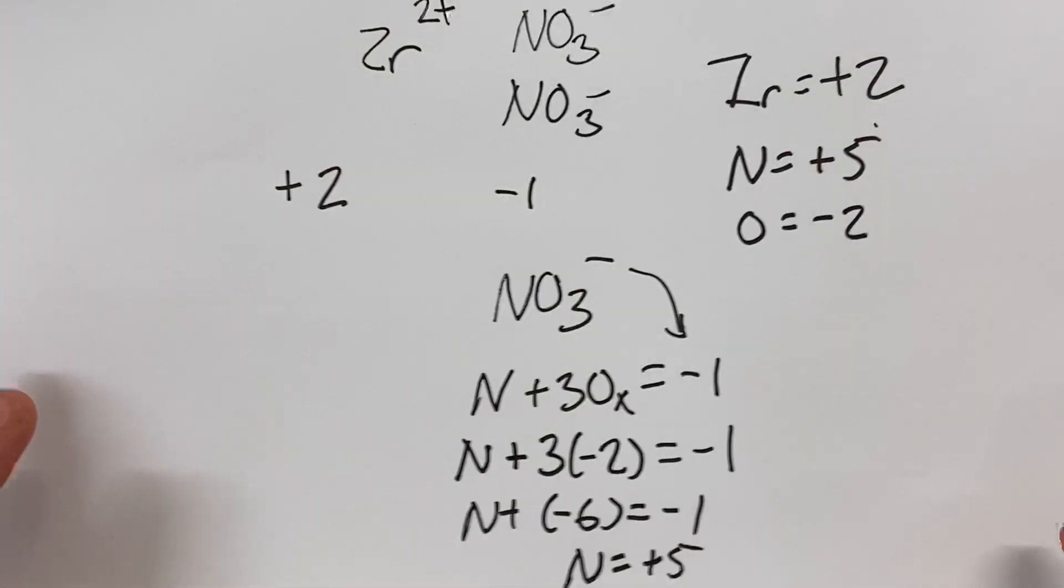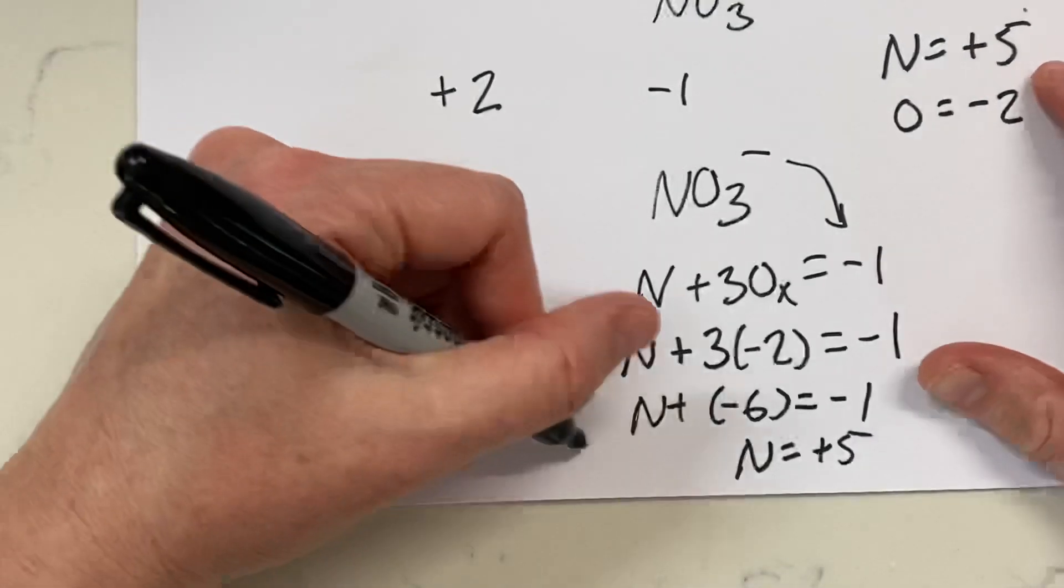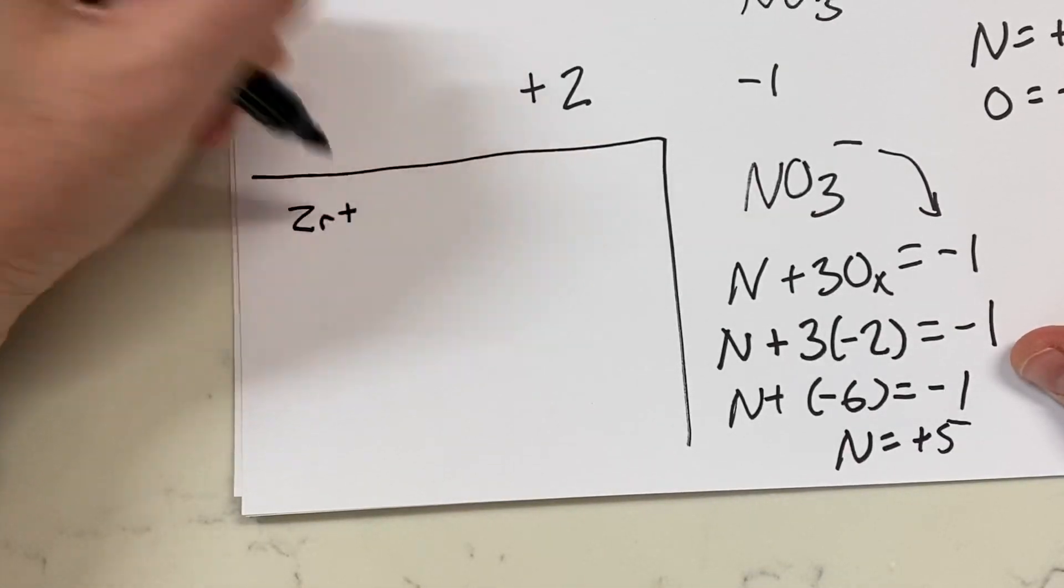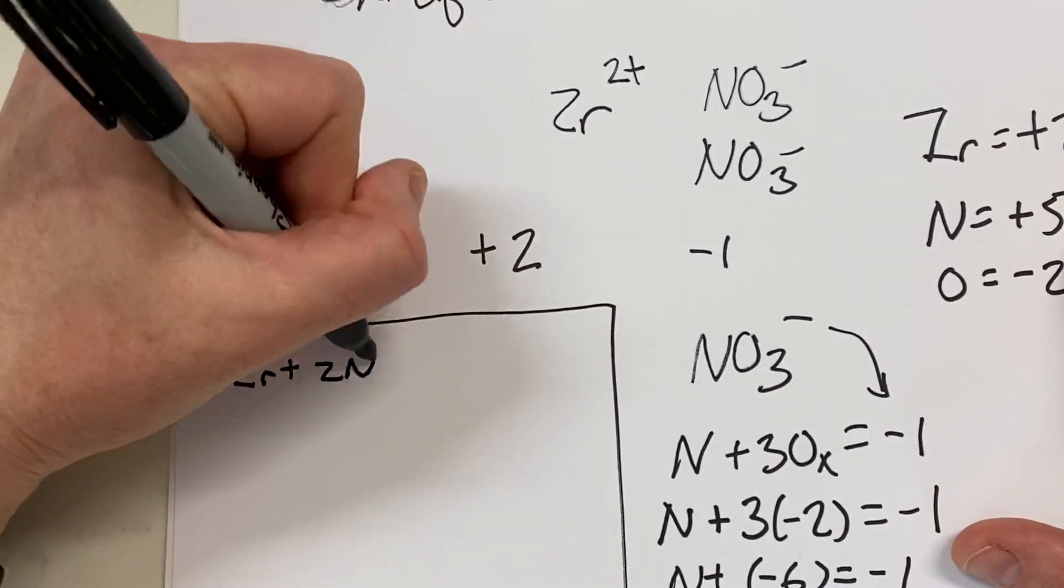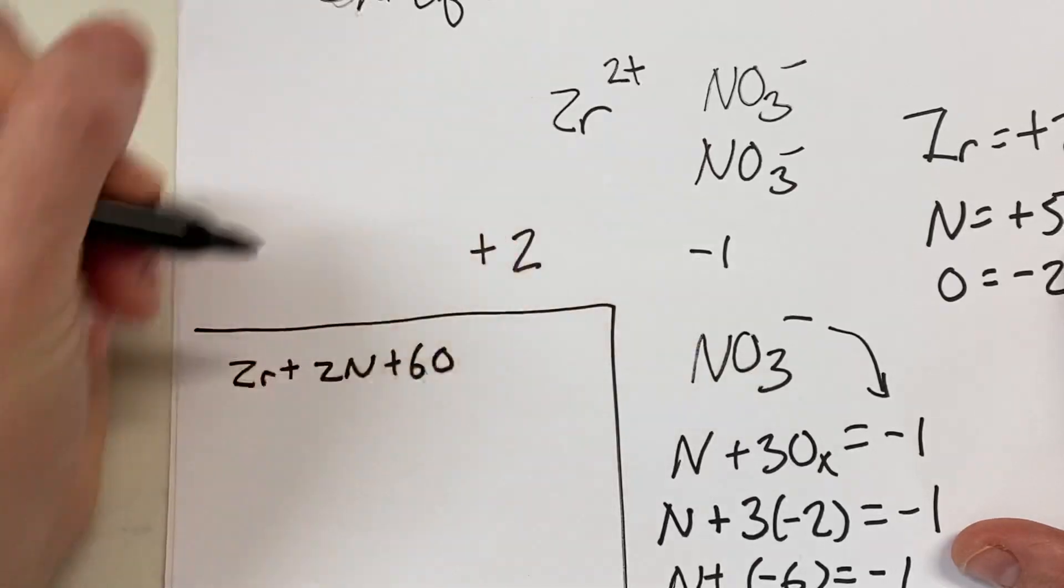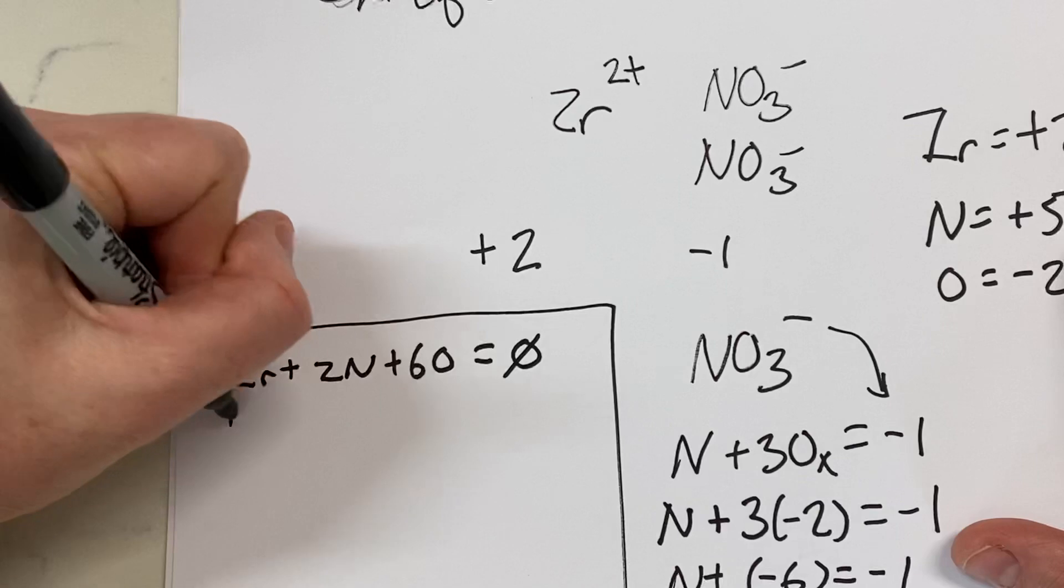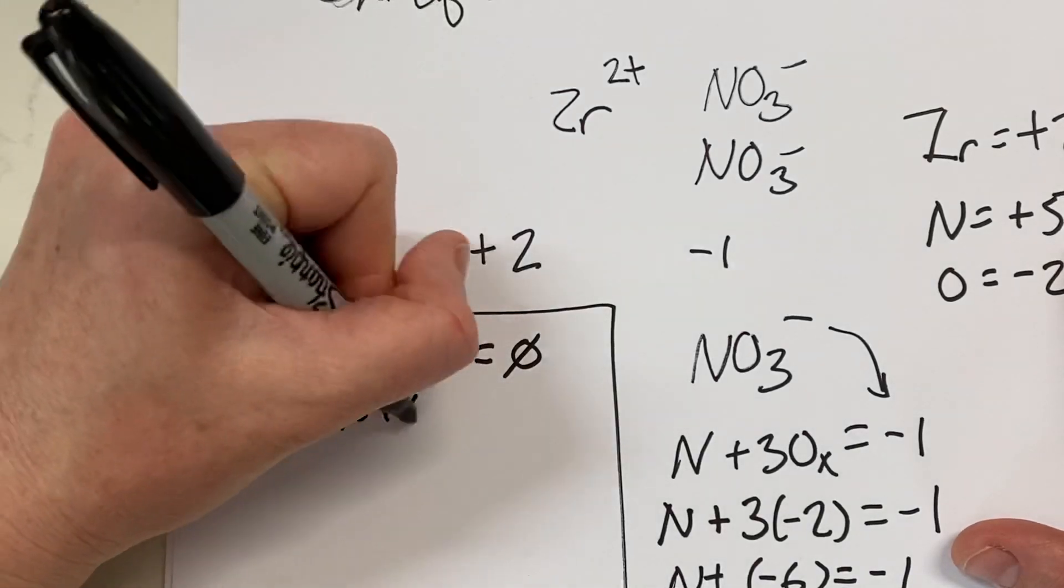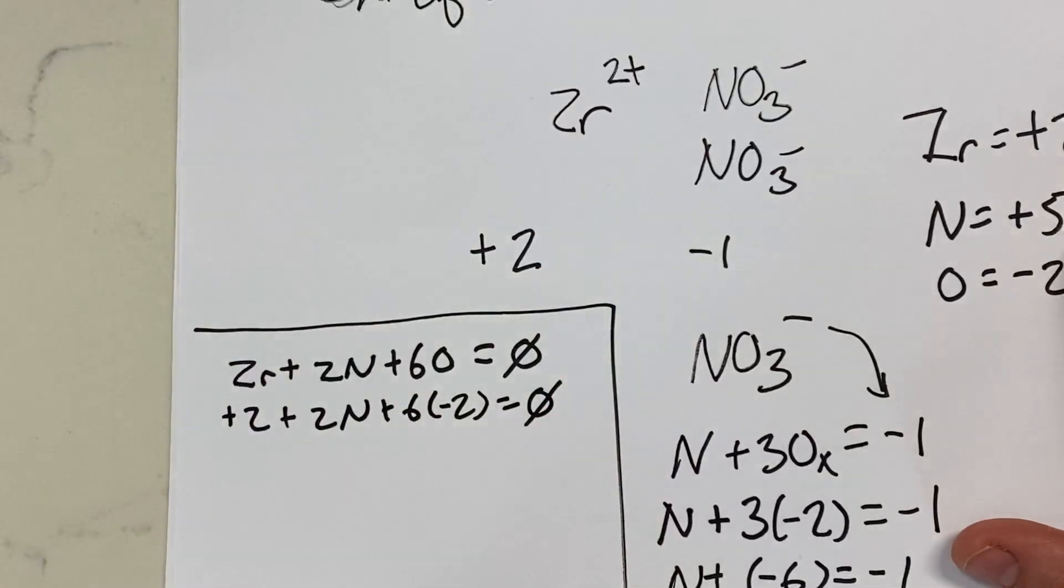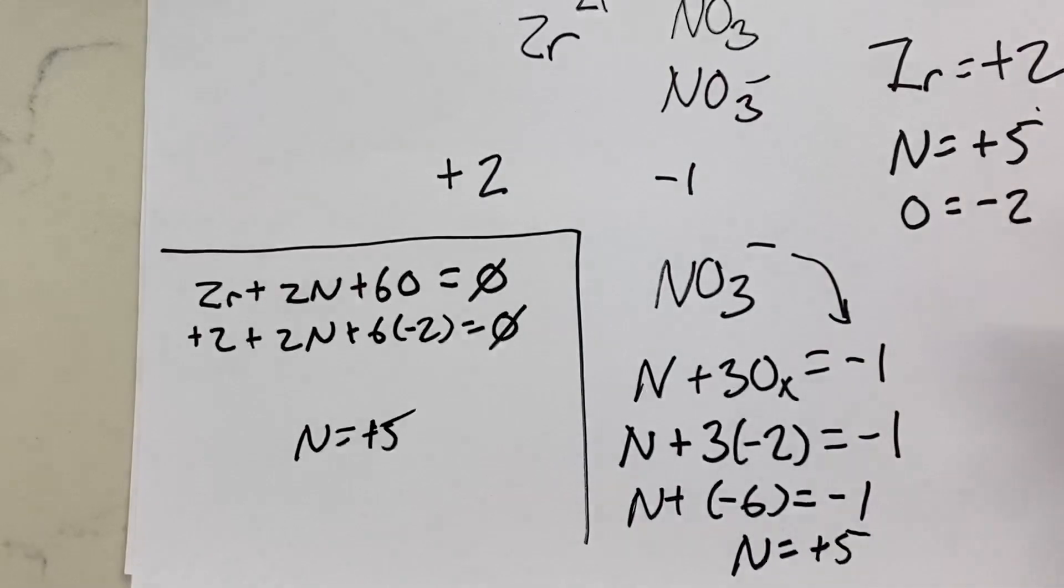Now, you could have done a much more difficult way of going around here, and that would have been to take zirconium plus 2 nitrogens plus 6 oxygens, all adding up to equal 0. And you'd have to know that the zirconium was plus 2, plus 2 times N, plus 6 times negative 2, must add up to equal 0, and on and on. You would also have found out that N equals positive 5, and that would have given you all the information you needed.